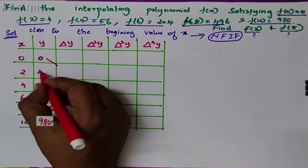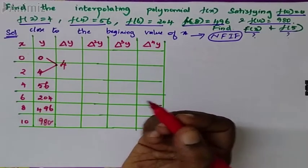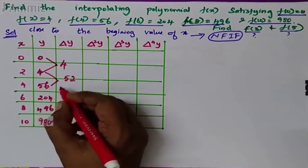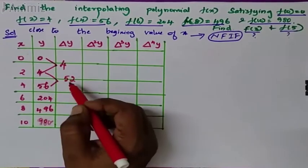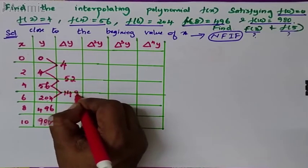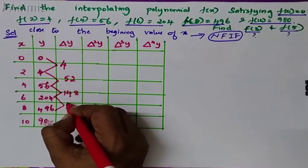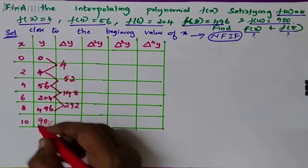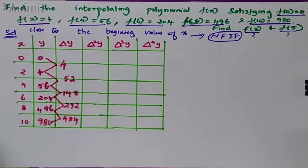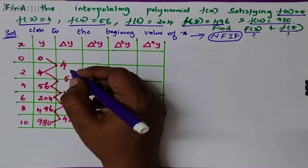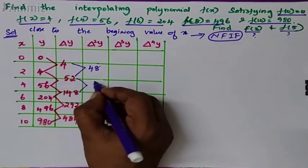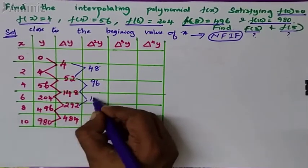Now first difference: 4, then 52. Second difference: 56 minus 4 is 52. Then 204 minus 56 is 148, then 292, then 484. Now second difference is 48, this is 96, this is 144.